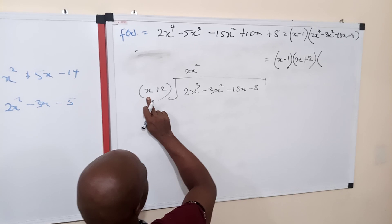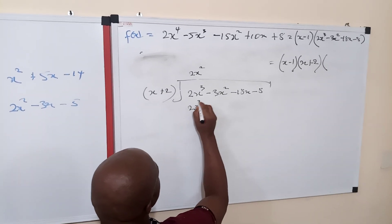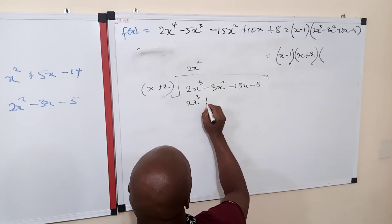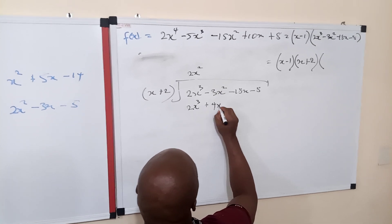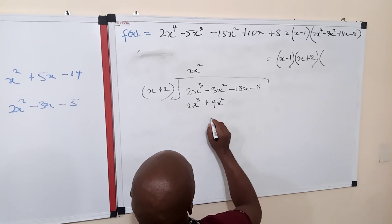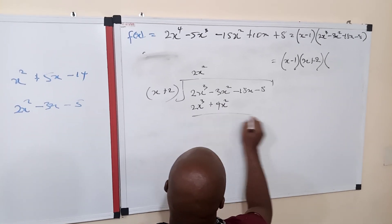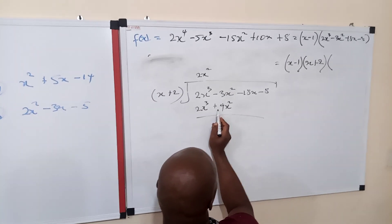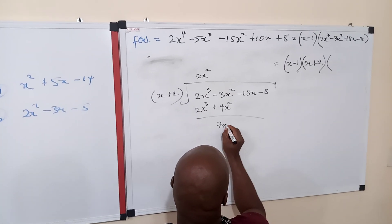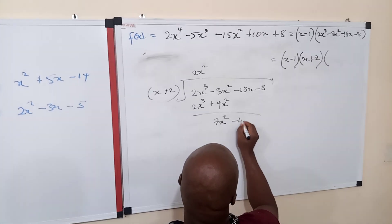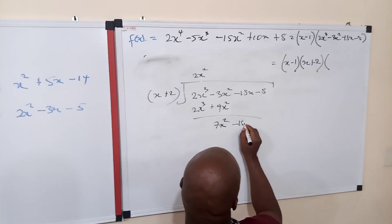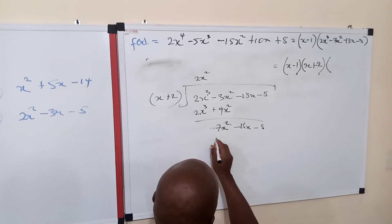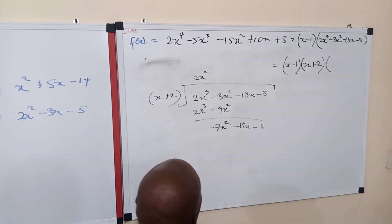Take out the leading term: x squared, so that when you multiply x plus 2 by 2x squared, you get 2x³ plus 4x². Now subtract. The 2x³ terms cancel, and here we have negative 3x² minus 4x², giving negative 7x², then bring down negative 18x and negative 8.